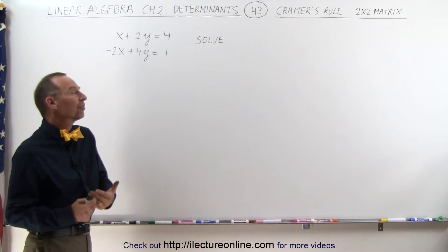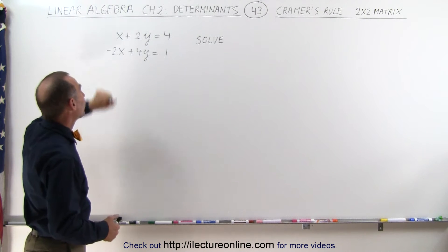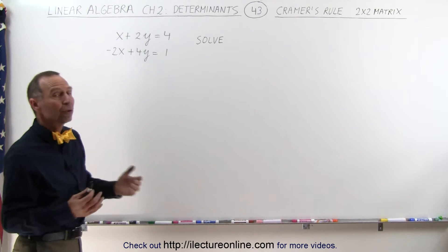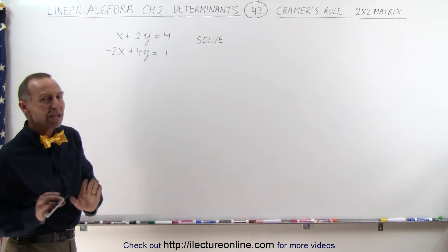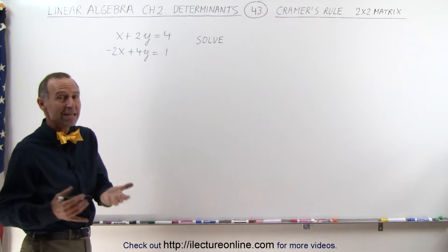Let's start with a simple system, just two variables and two equations. How do we do that? We create three matrices. Let's call them A, B, and C.